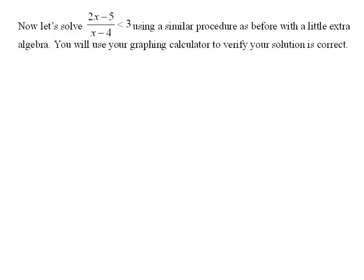Okay, now let's try a more complicated one. This one says 2x minus 5 divided by x minus 4 is less than 3.